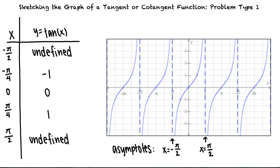If we were to plot more points we would see that asymptotes also occur at x equals positive or negative three pi halves, x equals positive or negative five pi halves and so on.